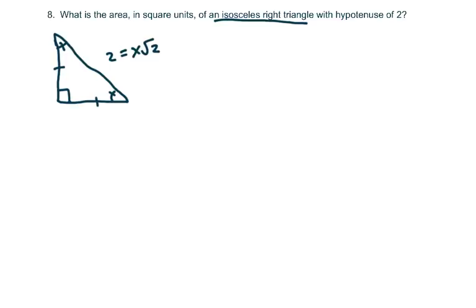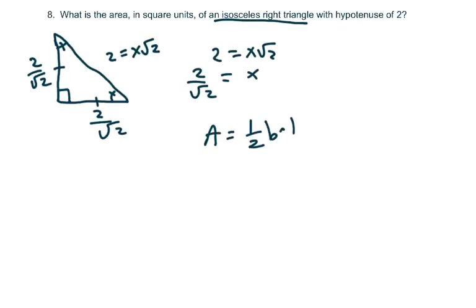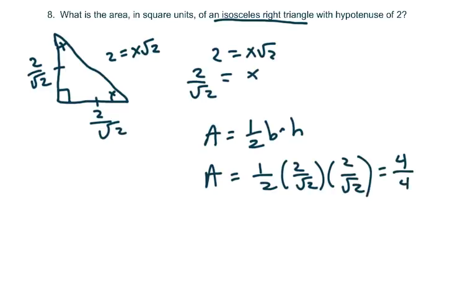So basically, just solve for x. So 2 equals x√2. So x equals 2 over √2. And we're just going to go ahead and leave it like that and not rationalize it because this is a griddable also. So we want the area. The area equals 1/2 base times height. So area equals 1/2 times 2/√2 times 2/√2, which equals 4/4, which equals 1. So that's what you would grid in, 1.